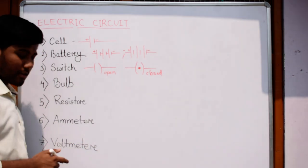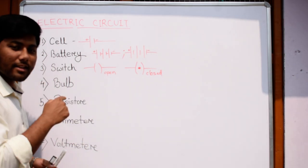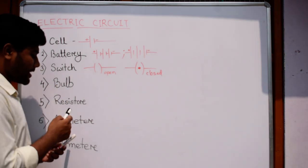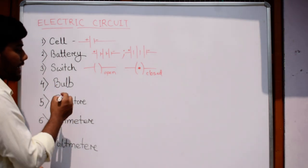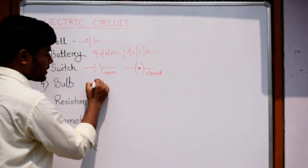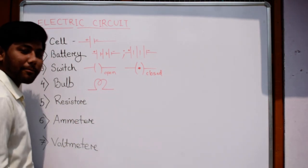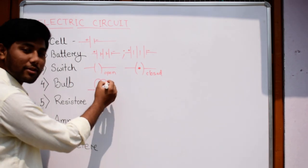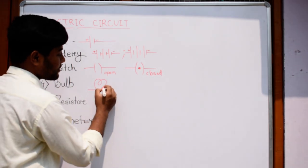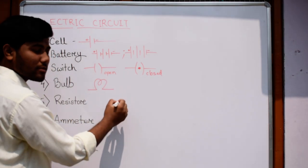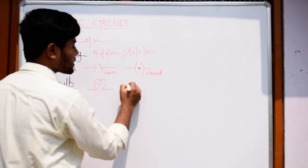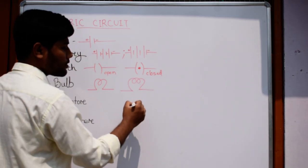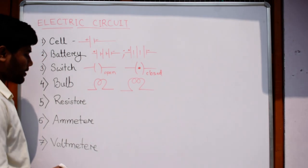Then we denote the light. We call the light as bulb and we denote it by this symbol, which looks like a tungsten filament. In some books it is given by two rings also.